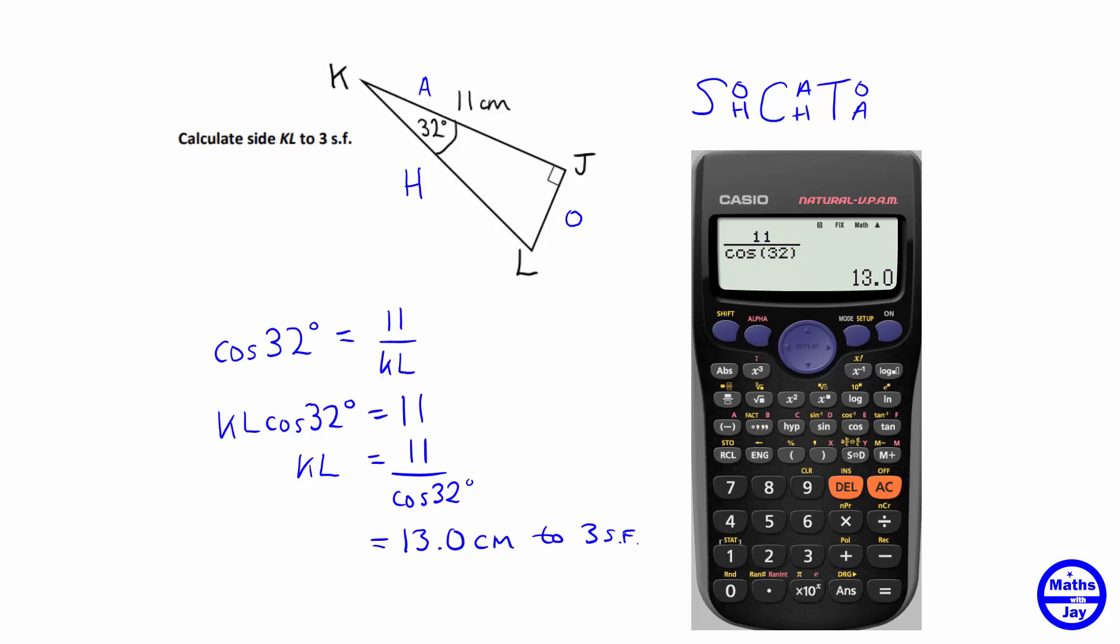Whenever you're finding the hypotenuse of a triangle using either sine or cosine, you will find that you will end up needing to do a division. Sine and cosine have values between zero and one, so you would want to be dividing by a decimal number in order to get a number that's bigger than one of the smaller sides of the triangle.